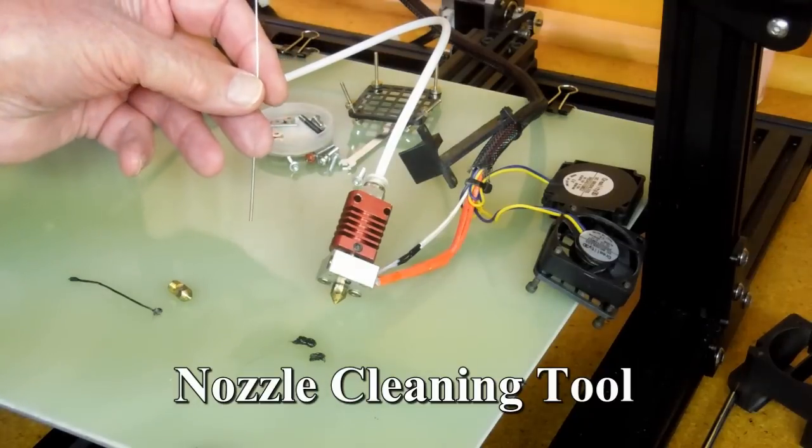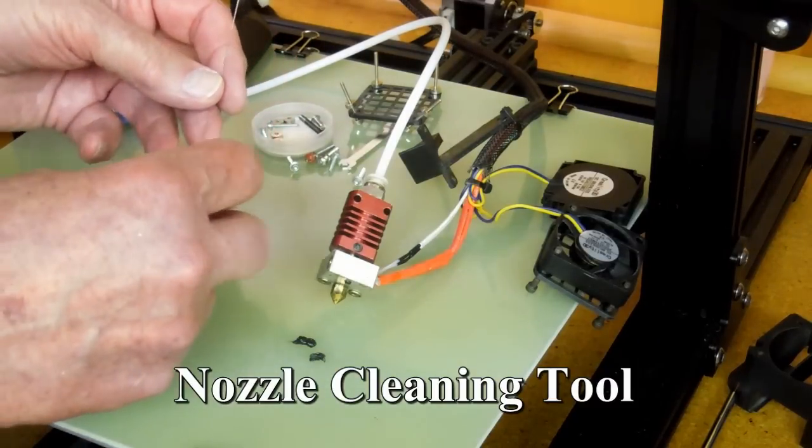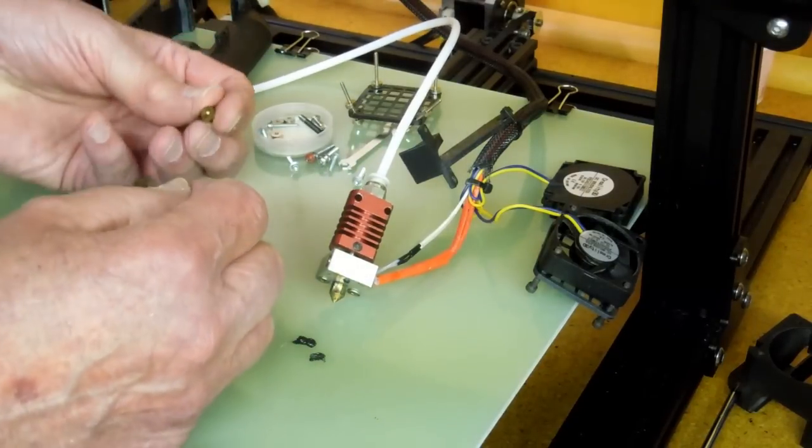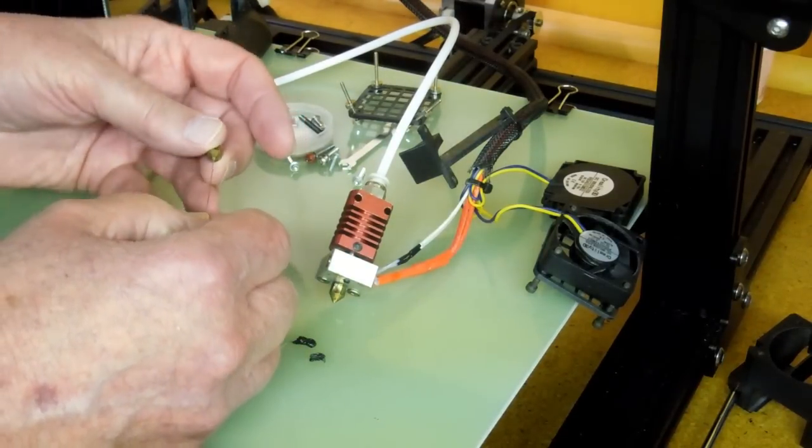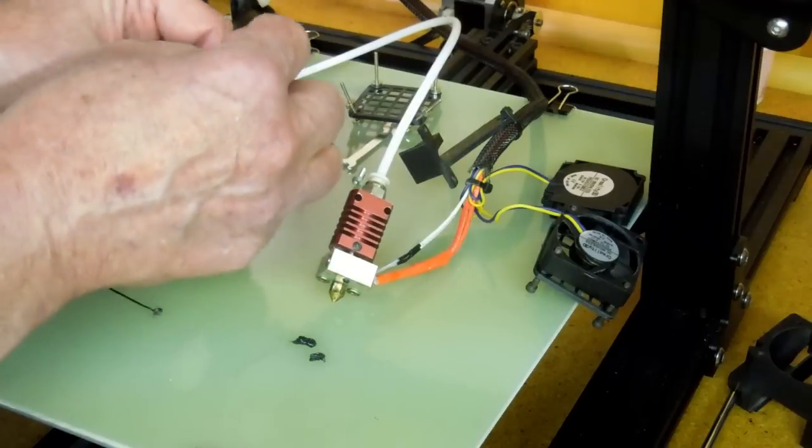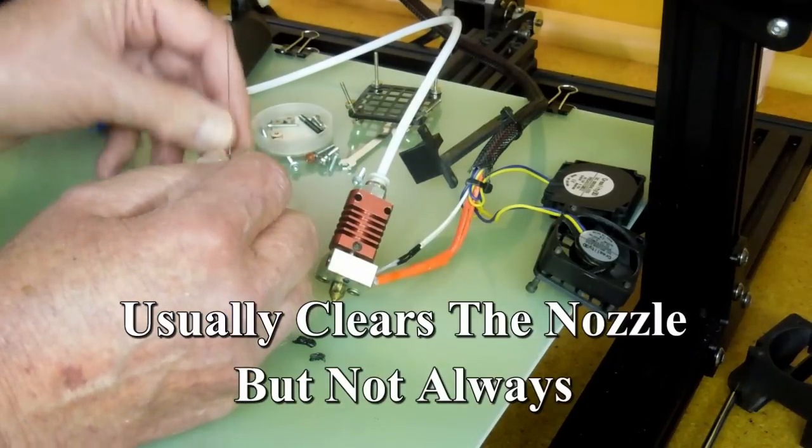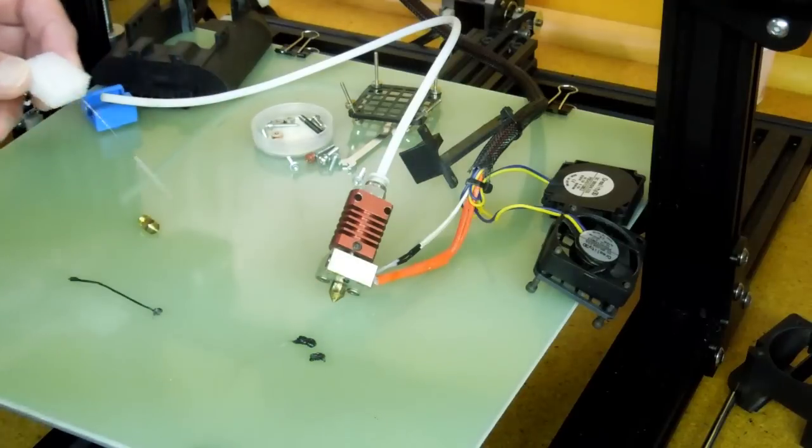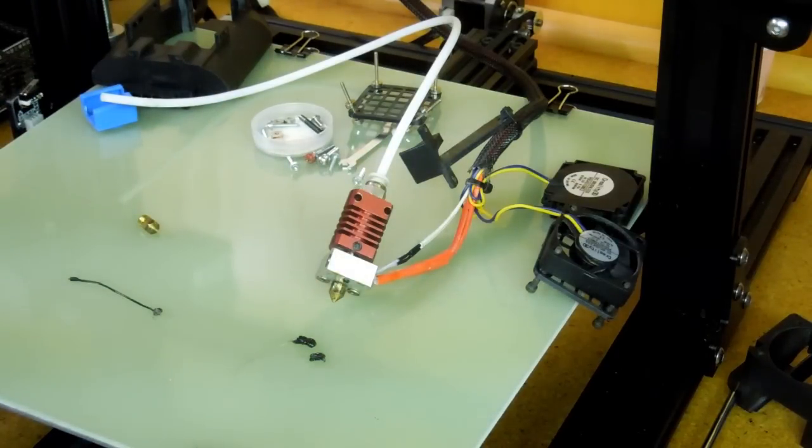One of these came with the printer. It's a nozzle cleaning tool and you can stick that up inside there. Just stick that in the end of that nozzle. When this is hot you can work that up in there. That will get things going again. Spares are available for this cleaning wire. I'll list that in the description.